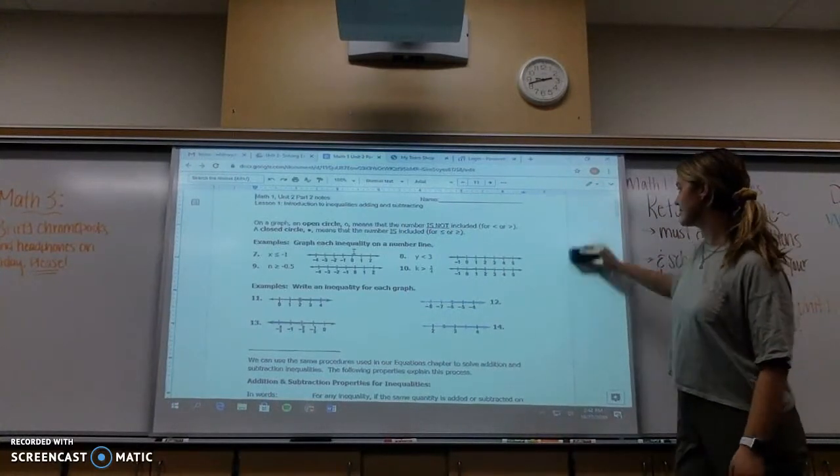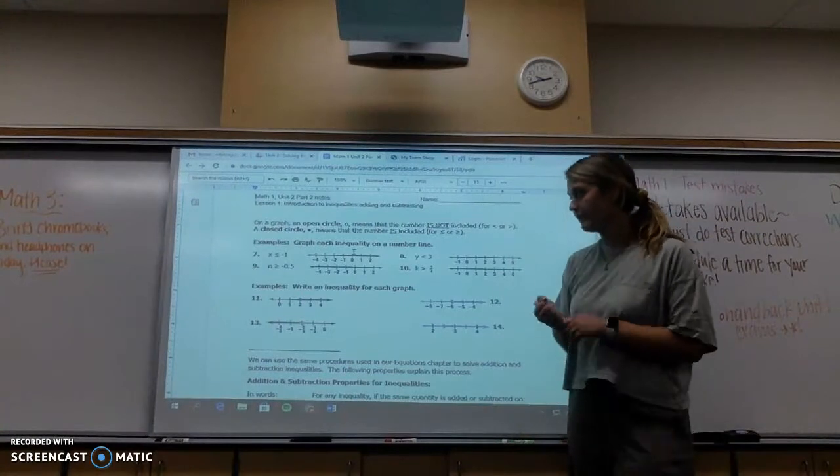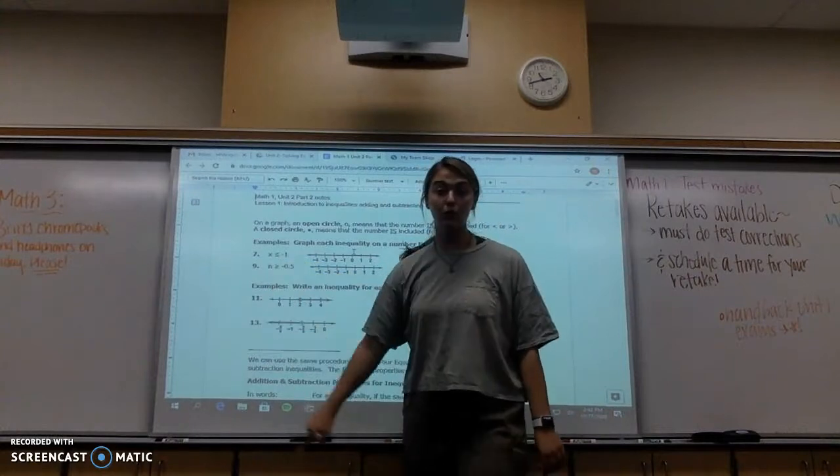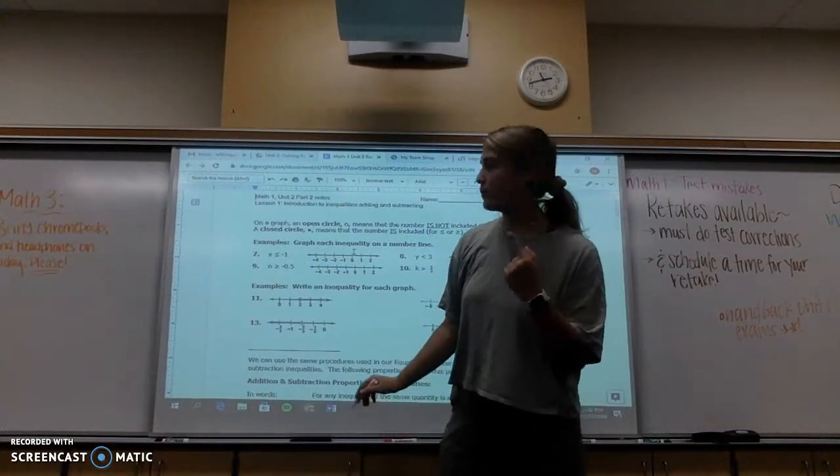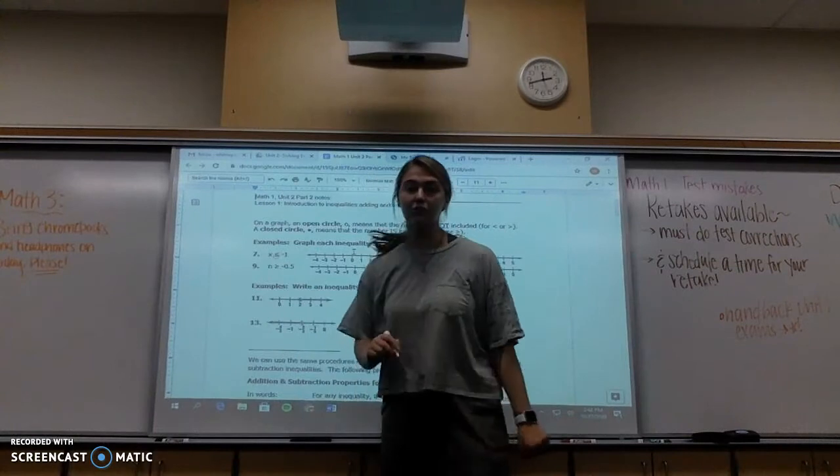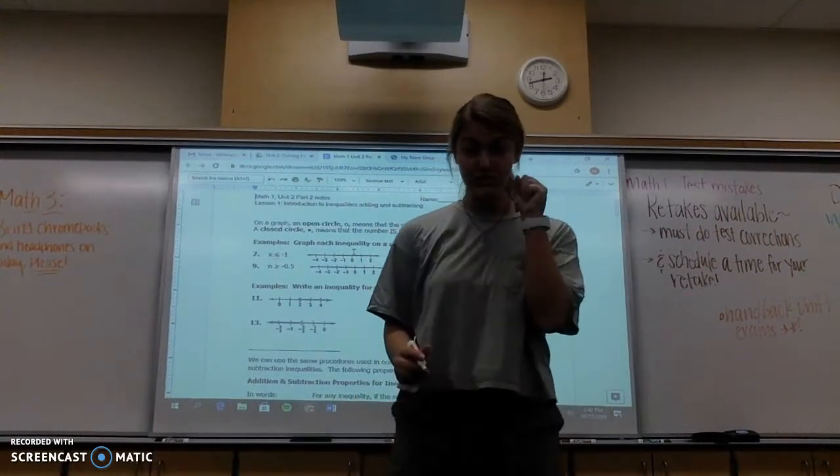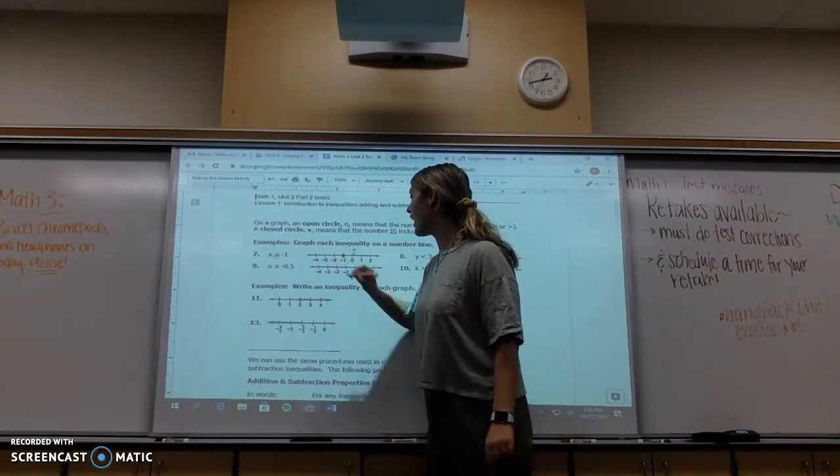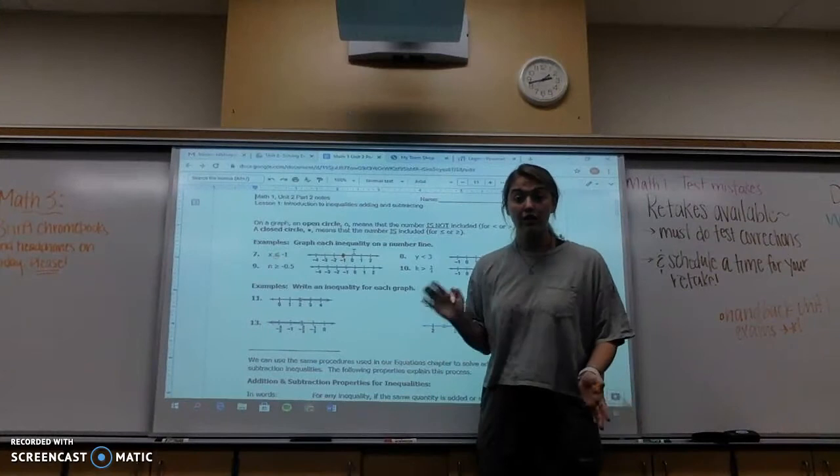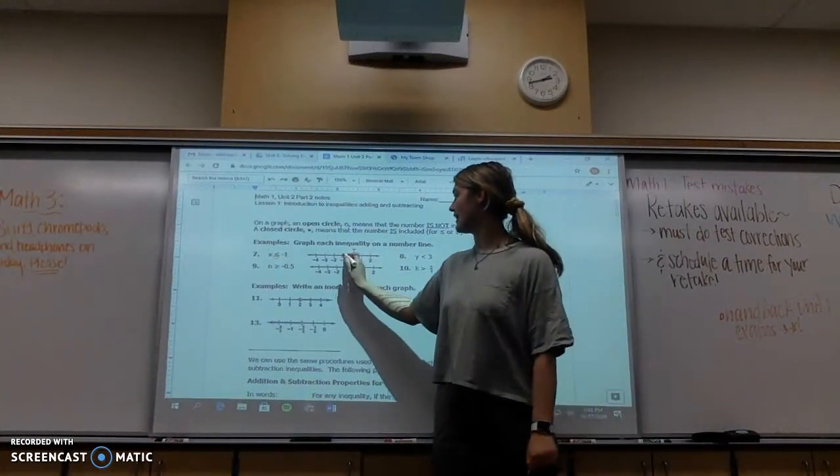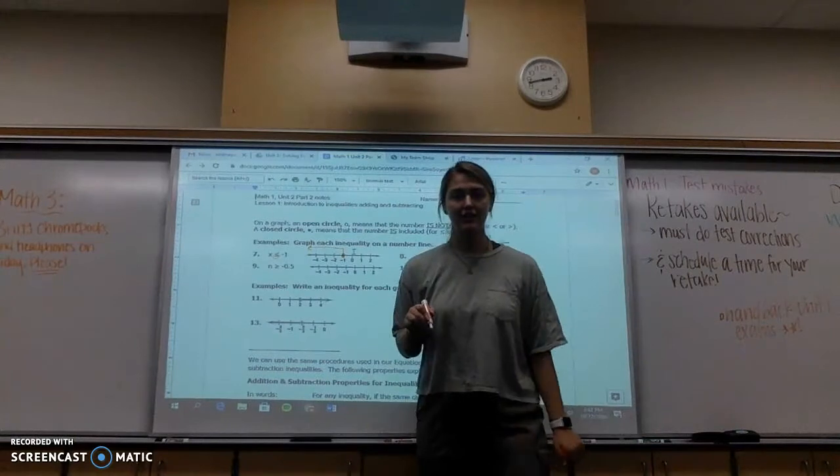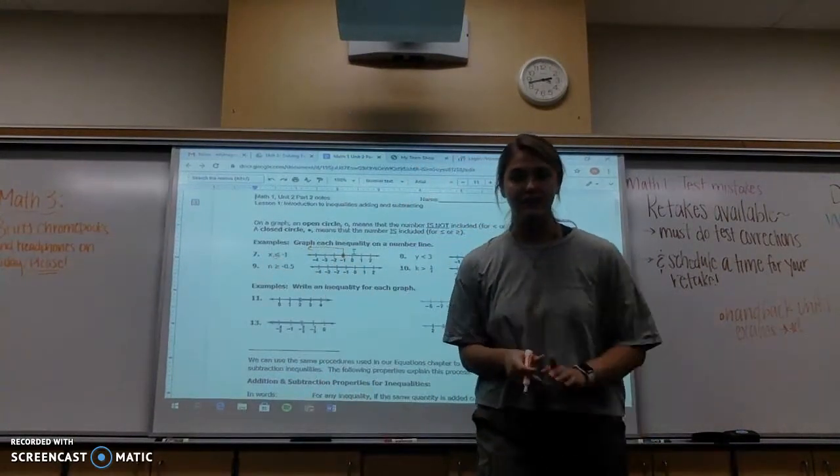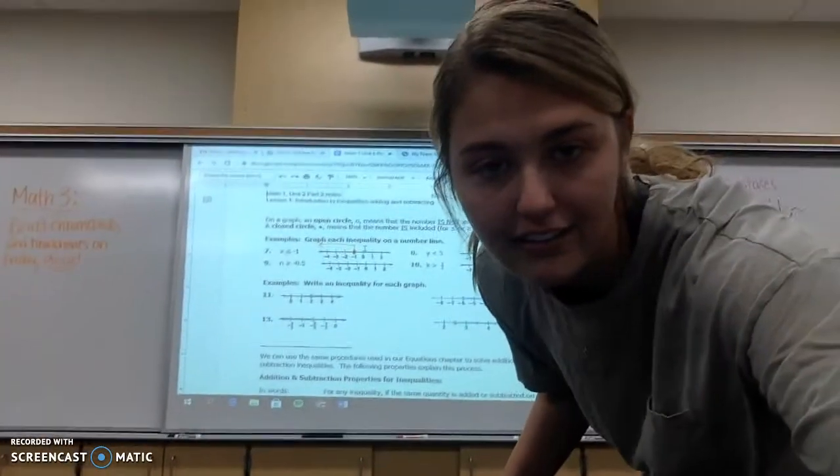But just to practice that idea, we have something like x is less than or equal to negative 1. So the first thing I notice is that it is a less than or equal to, so it's going to be a closed dot. And I need to find negative 1 on here. I'm going to have a closed dot, and then I need to show where it's less than. Less than goes left. So when we have x is less than or equal to negative 1, this is how we graph it. Can you guys see that very well? Oh yeah, you can. Perfect.